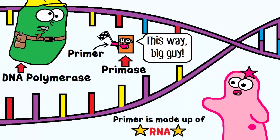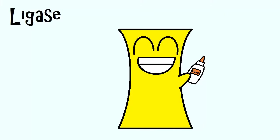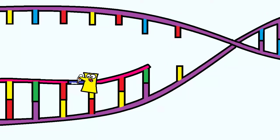What's interesting about the primer that primase makes? It's actually a piece of RNA. Next, ligase — the gluer. It helps glue DNA fragments together. More about why you would need that a little later.